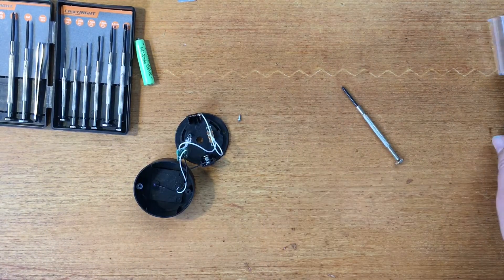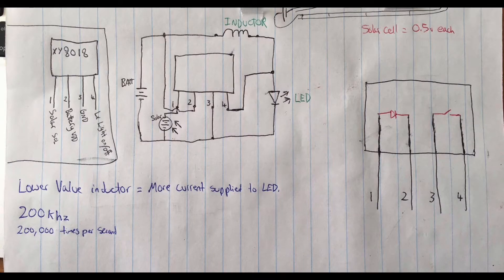The IC is marked XY 818. I gave it to Google and found a couple of schematics on it. It has four leads: the first one is the solar input, then battery positive, negative, and the last one controls when the light turns on and off based on the input voltage from the solar panel.